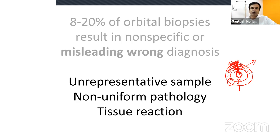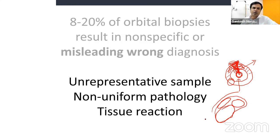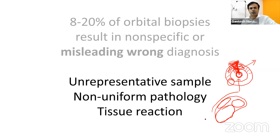Similarly for lymphoproliferative lesions — a lacrimal gland lesion may have benign reactive lymphoid hyperplasia in one area, atypical lymphoid hyperplasia in another, and lymphoma in yet another. Lymphoma is a marching disease with elements of benign reactive, atypical, and frankly malignant tissue in the same lesion. To ensure a representative sample, always estimate the tumor depth on CT and sample nearly the entire depth, layer by layer — initial third, middle third, and deepest third.